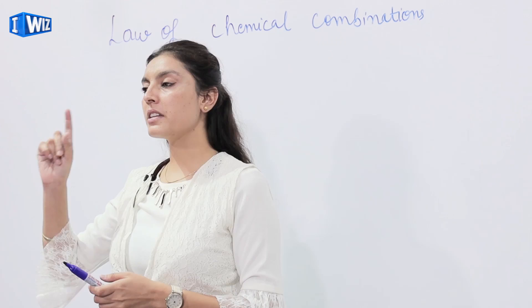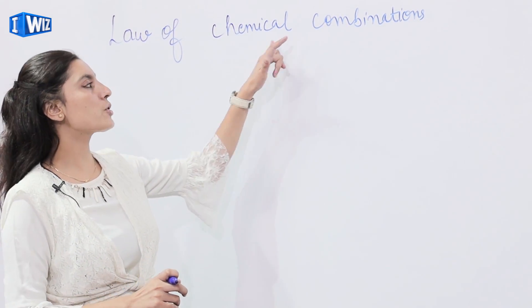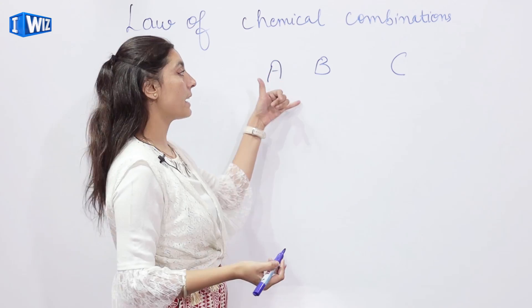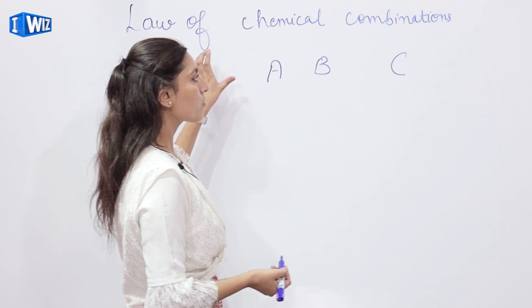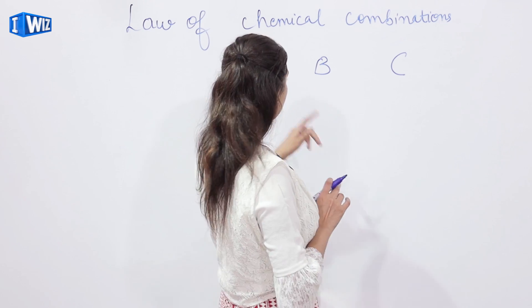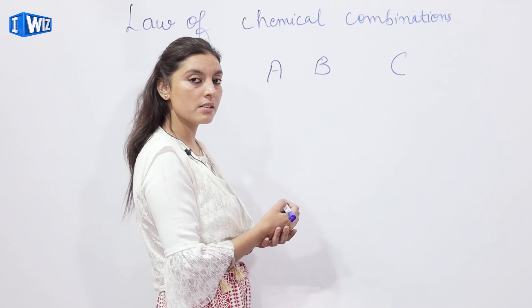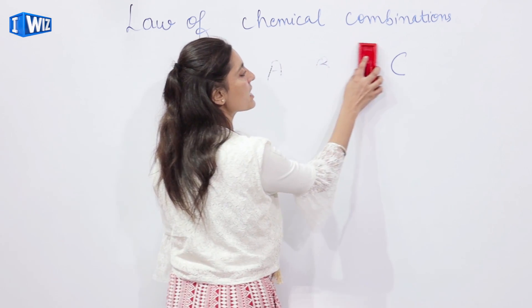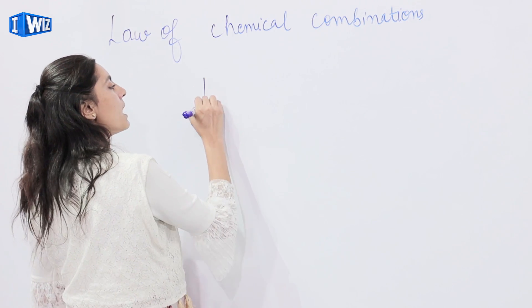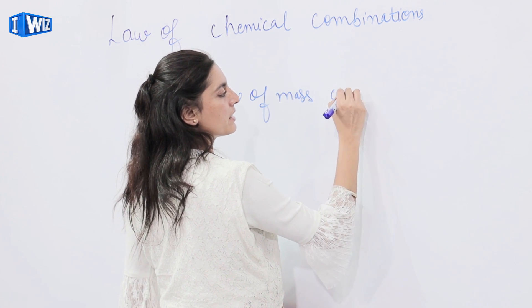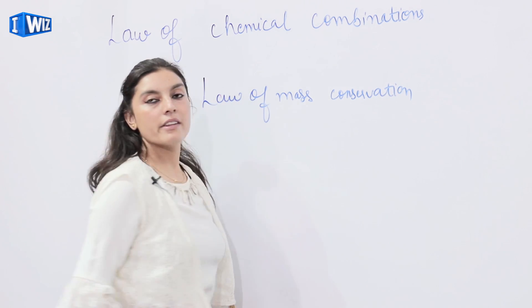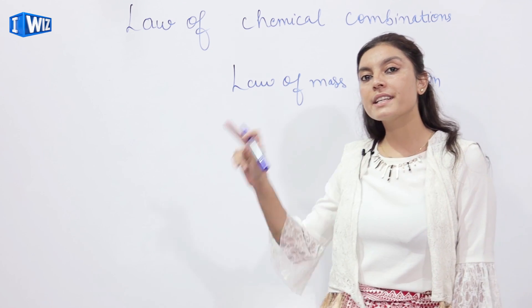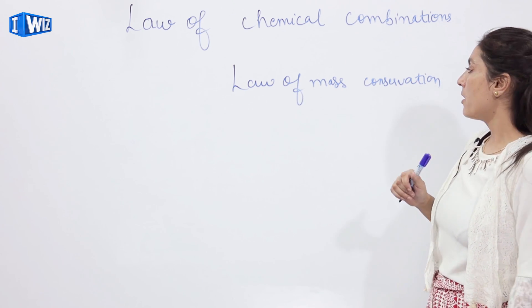These laws specify whether a particular kind of combination follows a given rule. When two chemicals A and B combine together to give a product C, we need to know whether they combine in the same ratio or have the same kind of mass. There are five laws of chemical combination in chemistry, and the very first and most important one is the Law of Mass Conservation.